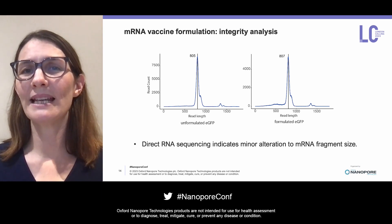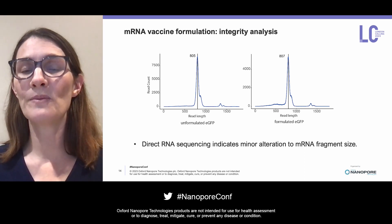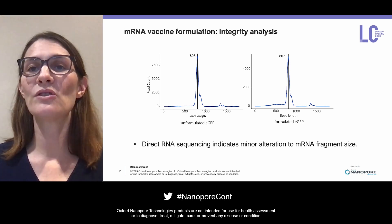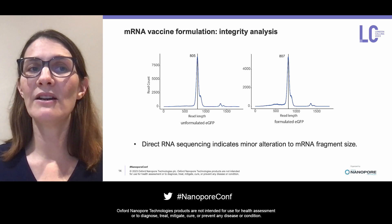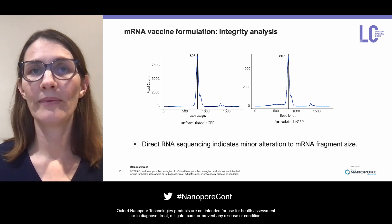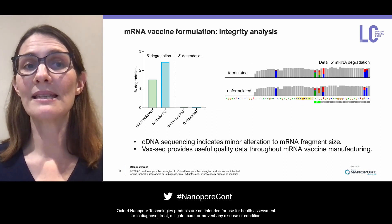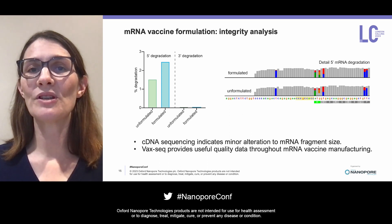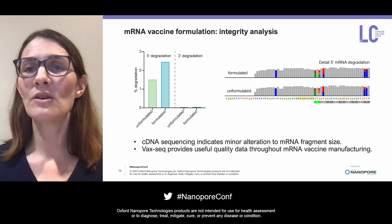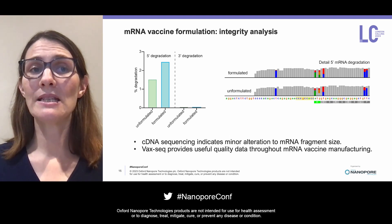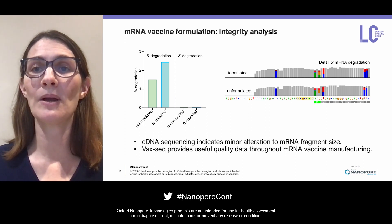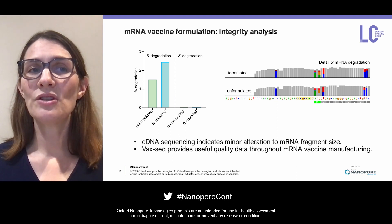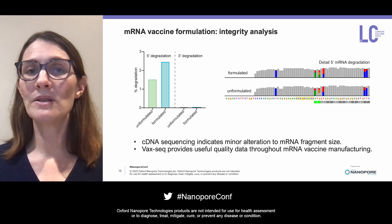Here you can see two read length distribution plots. When we compare the read lengths of the unformulated controls to the mRNAs extracted from formulated vaccines, we observe a slight increase in the abundance of short degraded mRNA fragments, at about the 500 nucleotide range. However, the majority of mRNA fragments do indeed remain intact. A more detailed analysis showed a roughly 1% increase in the proportion of 5' degradation, which would have a minor impact on protein translation. Despite this minor difference, the 5' UTRs of the formulated and unformulated mRNAs appear to be very similar according to this IGV plot. This analysis can be used to fine-tune and monitor the formulation protocols at BASE and compare them to those of other facilities.